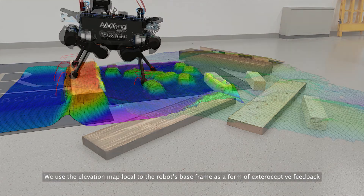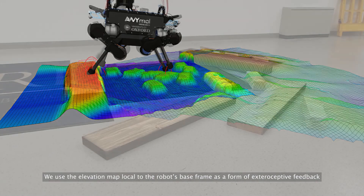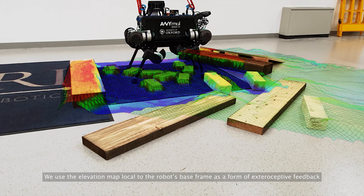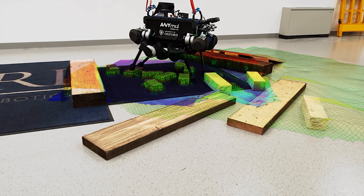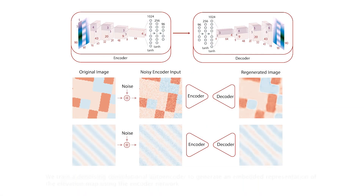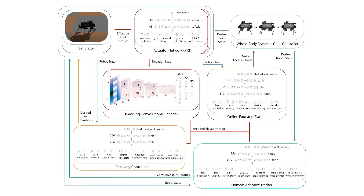We use the elevation map local to the robot's base frame as a form of exteroceptive feedback. However, instead of including it directly in the observation space of each of the RL policies, we train a denoising convolutional autoencoder so as to represent the elevation map in the form of a reduced dimensional embedded vector. This embedded representation of the elevation map along with the robot states becomes the observation space for each of our RL policies.